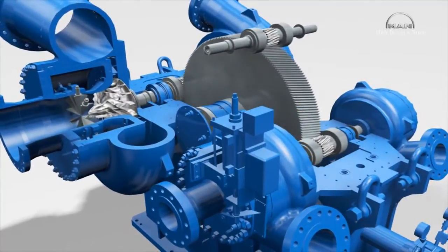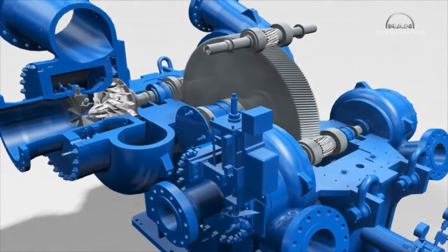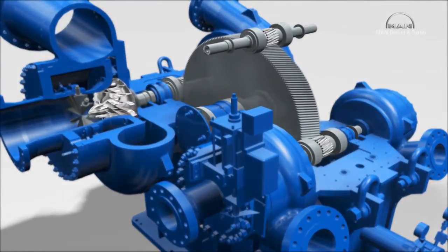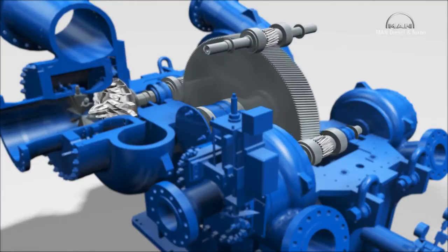Each pinion shaft meshes in the bull gear with its central teeth. The pinions have varying numbers of teeth, which gives different gear ratios depending on the particular pinion, and enables optimal speeds for the two individual compressor stages.